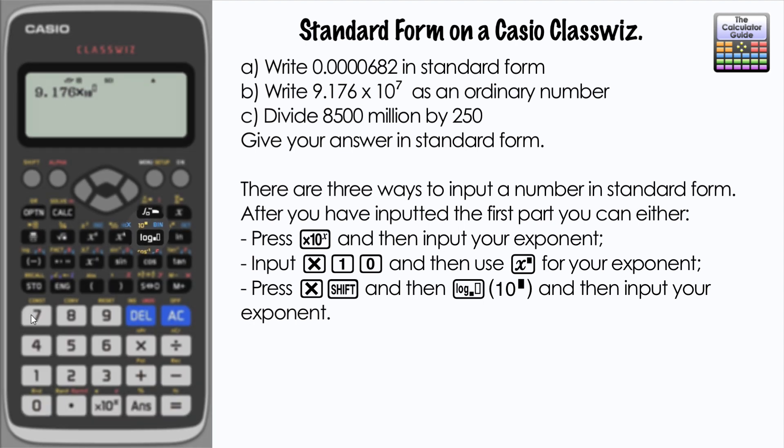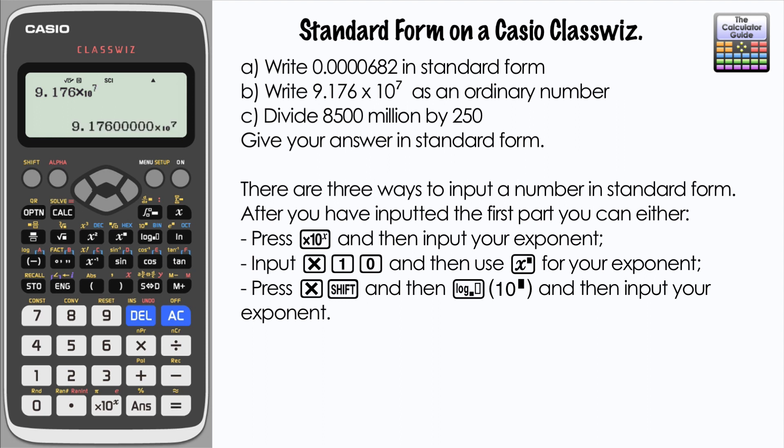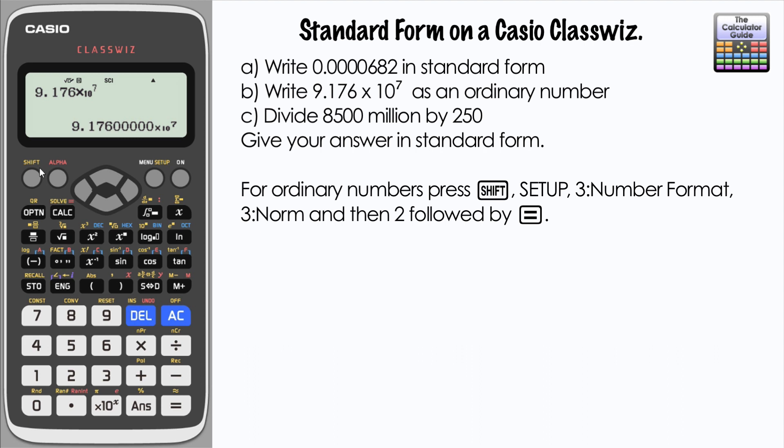Obviously, as I've said, your answer at this point is still being given in scientific notation. We want normal numbers, so we've got to change the number format to norm 2. So we want shift and set up, the number format, and then 3 for norm and then 2, so norm 2, equals to change our answer.